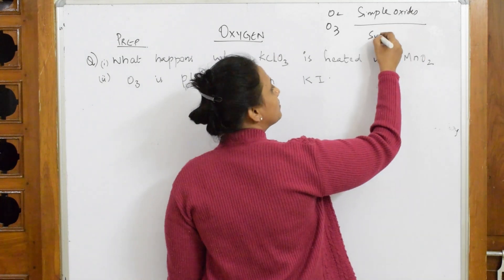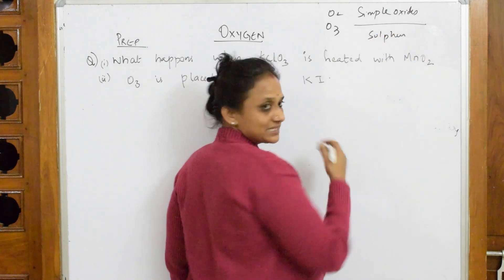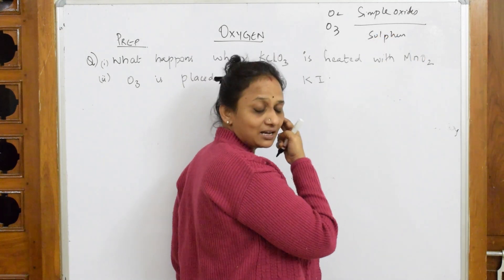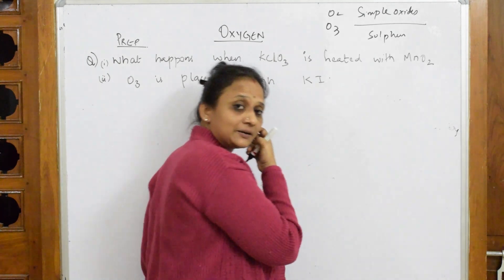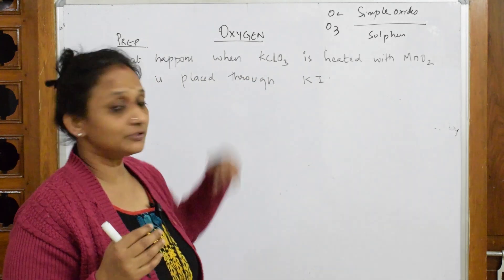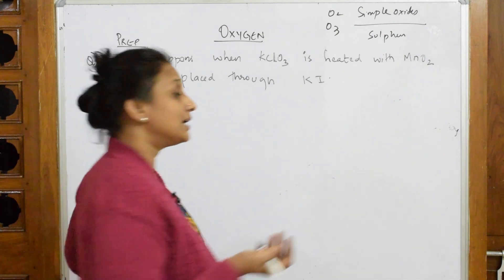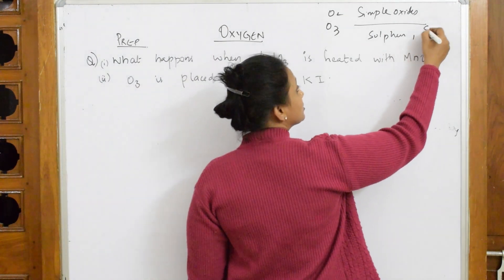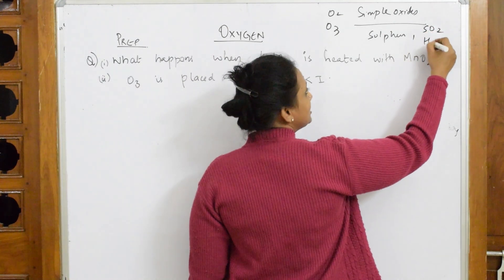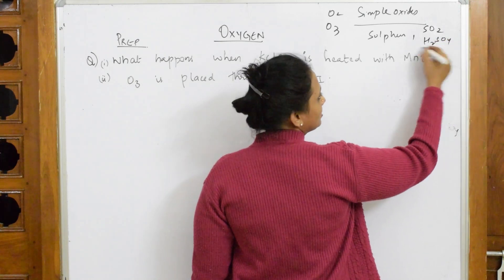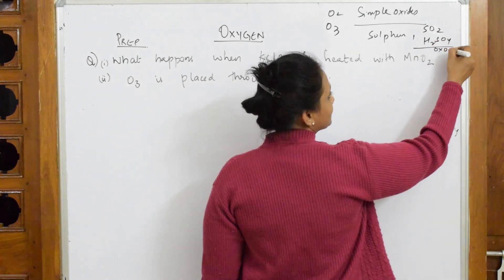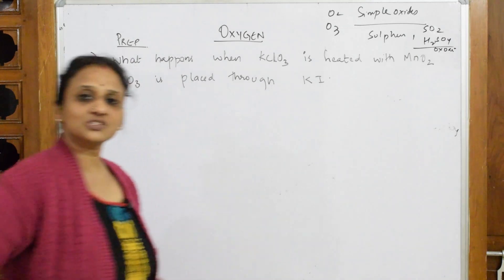After this I'll be going into the next element—sulfur. In sulfur I'll be teaching you about types of sulfur, that is rhombic and monoclinic sulfur, allotropes of sulfur. After sulfur I'll be teaching you sulfur dioxide, sulfuric acid, and oxo acids.